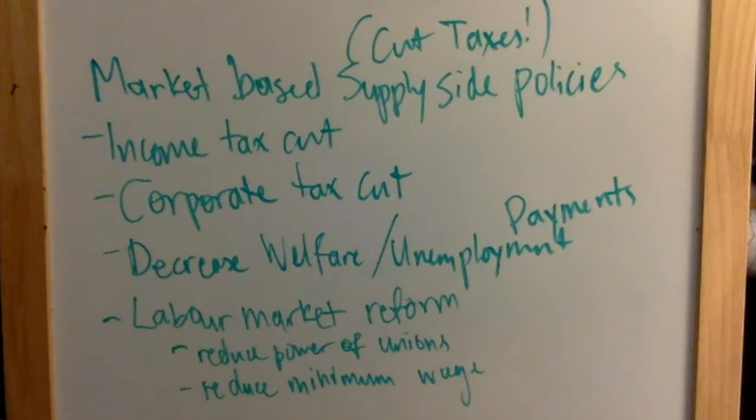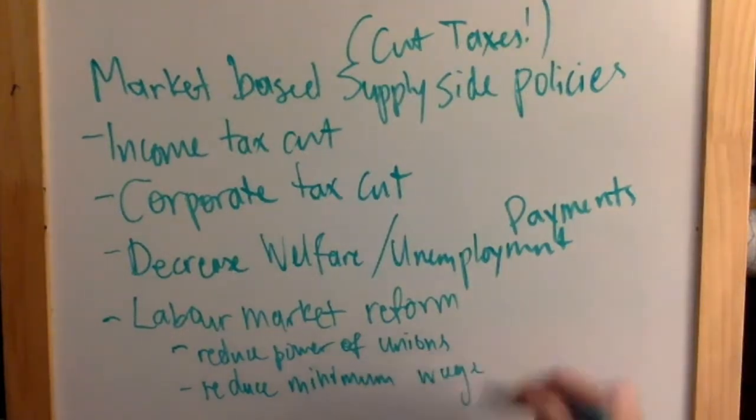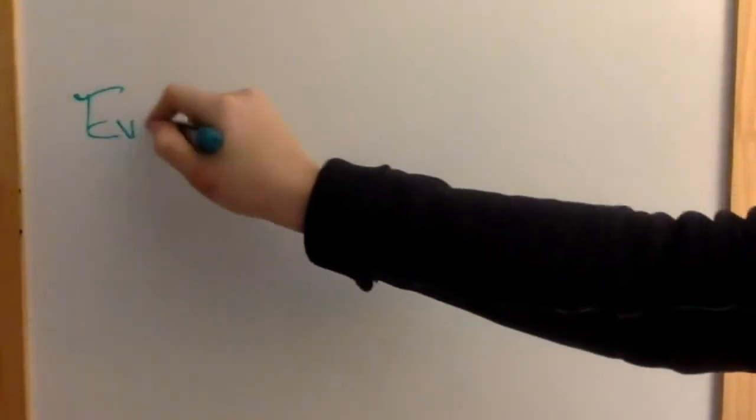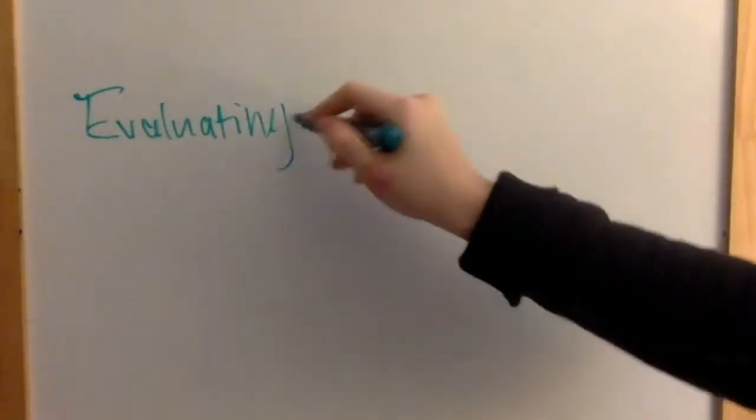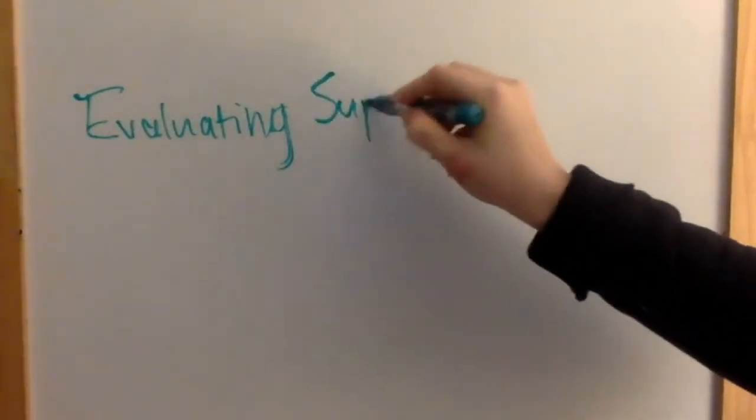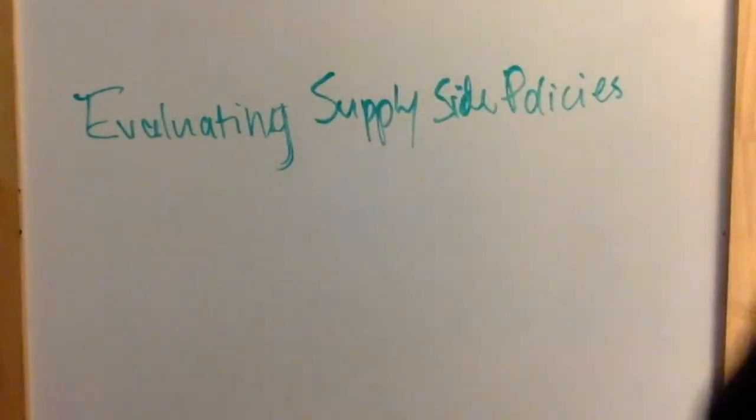Number five: policies that will encourage competition — privatization, trade liberalization, deregulation. Anything that will force firms to increase their efficiency and be more productive will shift the short-run aggregate supply outwards.